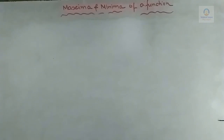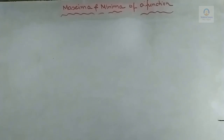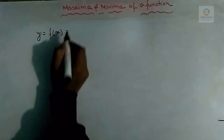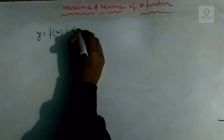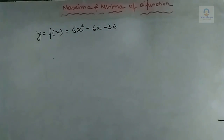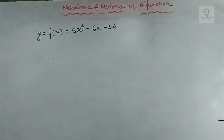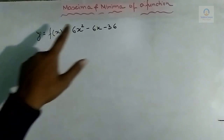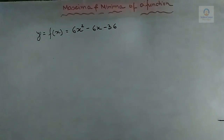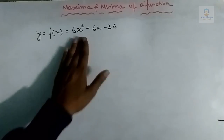Hello everyone, welcome to Technical Campus. In this video we are going to learn about maxima and minima of a function. Suppose we have a function y, which is a function of x, meaning y = f(x), and the value of this function is 6x² - 6x - 36. The value of y is totally dependent upon the value of variable x, so for different values of x we get different values of y.